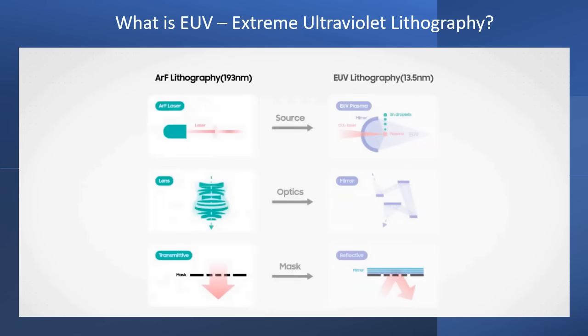Looking at the difference between ArF lithography and EUV lithography: the light source of ArF lithography is a laser, whereas the EUV generator uses plasma. ArF uses lenses while EUV uses mirrors. ArF masks transmit or block light, while EUV masks reflect or absorb light.